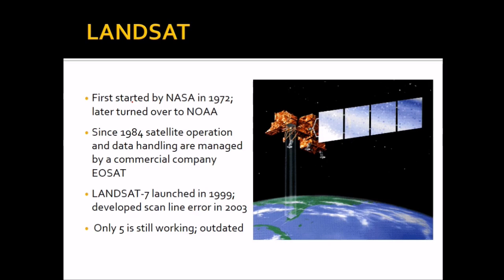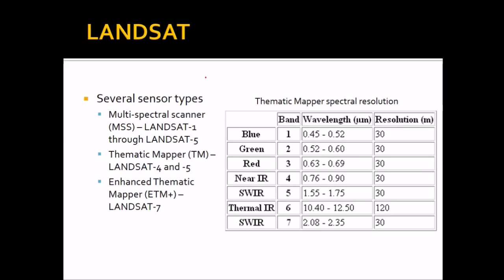Let us start with Landsat. This was first started by NASA in 1972, then later turned over to NOAA. Since 1984, satellite operation and data handling are managed by EOSAT. Landsat 7 was launched in 1993 and developed a scan line error in 2003, so only Landsat 5 is still working. Several sensor types exist in Landsat: MSS or multi-spectral sensor for Landsats 1 to 5, thematic mapper for Landsats 4 to 5, and ETM+ (enhanced thematic mapper) for Landsat 7. Only thermal IR has 120-meter resolution; all others have 30-meter resolution.